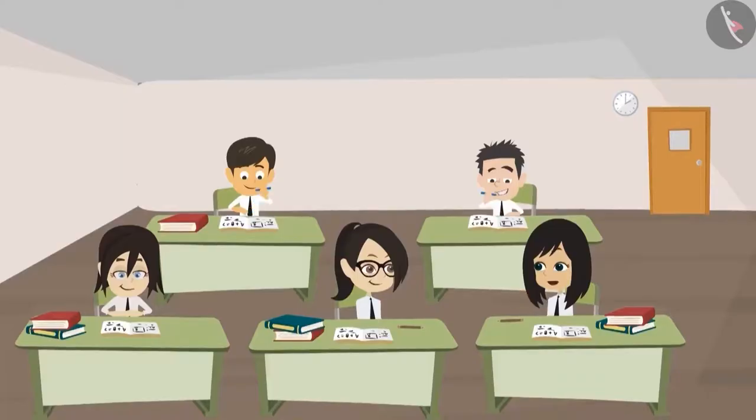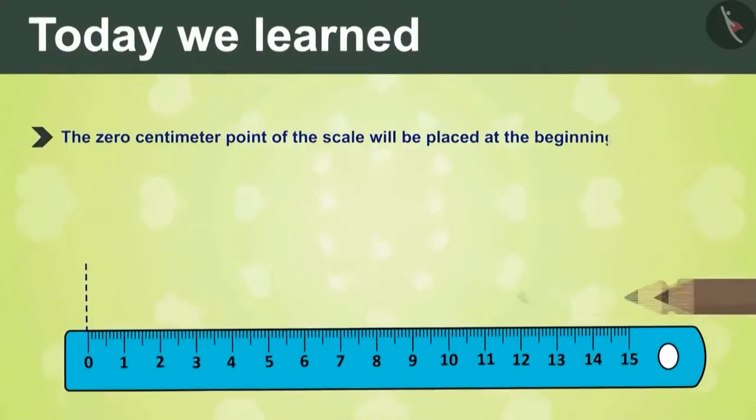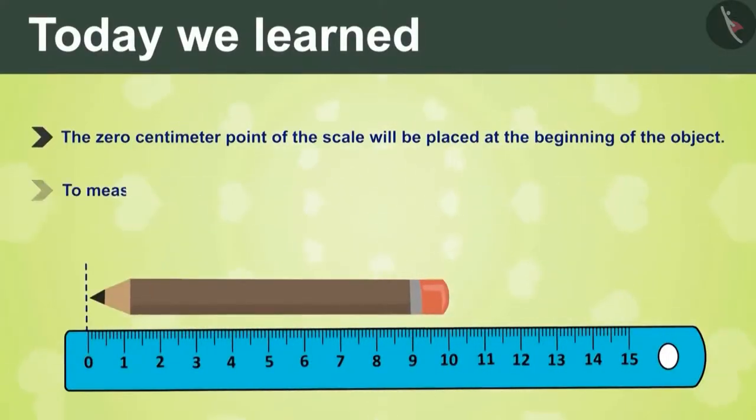We need to remember these two rules while measuring any object. The 0 centimeter point of the scale will be placed at the beginning of the object. And to measure an object, we will start from 0 marking on the scale.